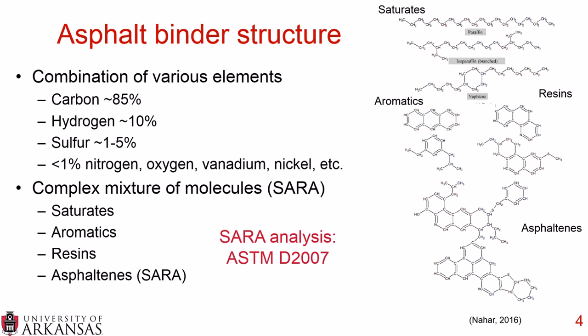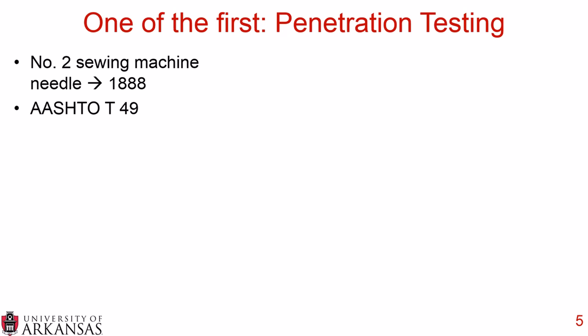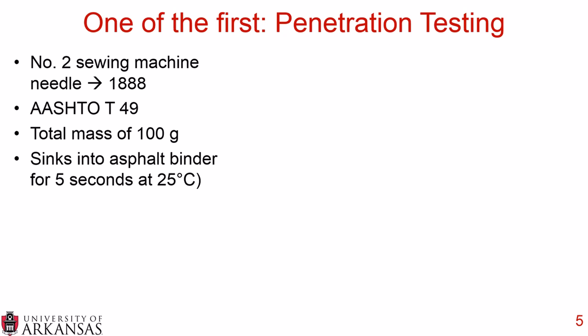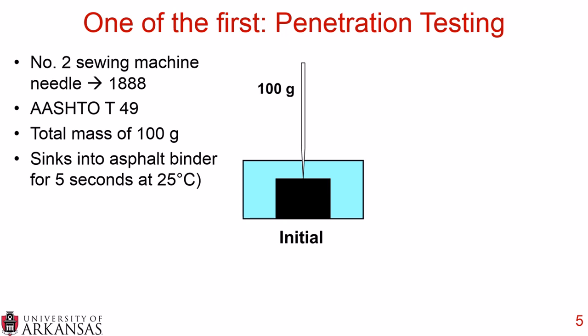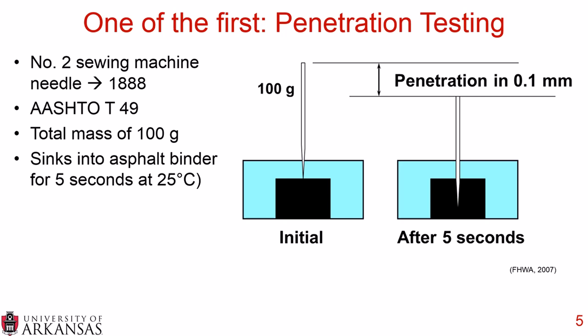For physical characterization, one of the oldest tests is the penetration test, literally developed using a number two sewing machine needle in 1888 — found in AASHTO T49. You place a 100-gram mass on a needle and let it sink into asphalt binder for five seconds at 25 degrees Celsius, with the sample sitting in a water bath to control temperature. You then measure the penetration depth.